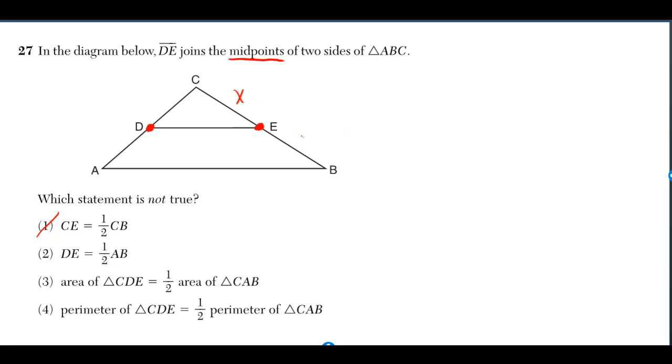If this is X, then this is X. If this is Y, then this is Y. Is it true that CE is equal to half of CB? Yes, because X is half of 2X. But we want the one that's not true, so it can't be 1.